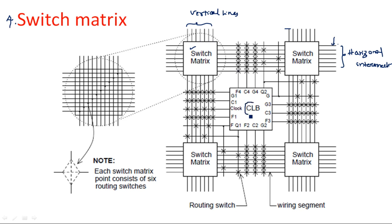If you take one particular CLB from the FPGA board, that CLB is surrounded by a switch matrix and interconnecting wires. The input to the CLB can come from any one of the interconnecting wires on any side. Data can be transferred in any direction or taken from any direction from the CLB. CLBs can have data transfer options on all directions of the board.